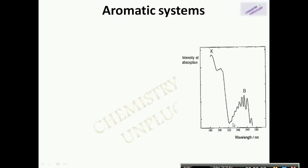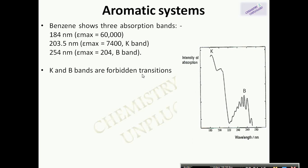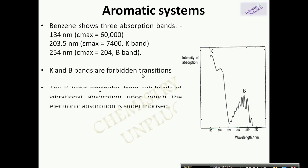First is electronic transition in aromatic systems. Benzene shows three types of absorption bands: first at 184nm, second at 203.5nm known as the K band, and third at 254nm known as the B band. The K and B bands are forbidden in nature because the benzene molecule is highly symmetrical. The B band consists of fine peaks originating from absorption by sub-levels of vibrational energy,